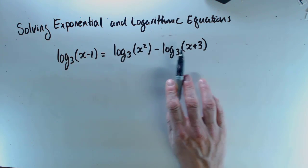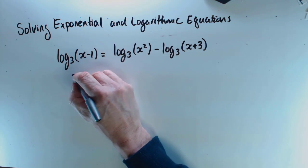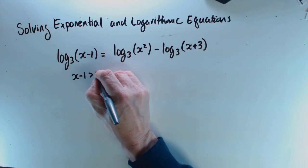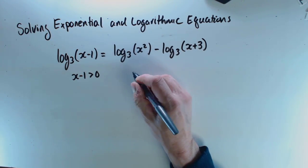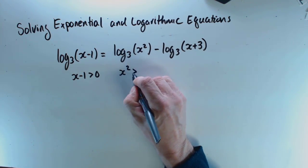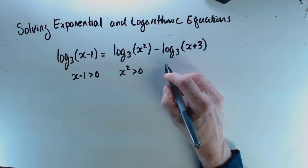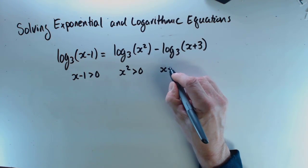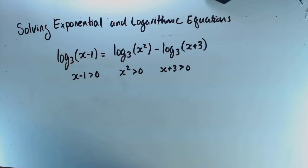Now one thing that has to be true is that x minus 1 has to be greater than 0 because I can't take the log of anything that's negative. x squared has to be greater than 0, and that's no big deal. x squared is always bigger than 0, and x plus 3 also has to be greater than 0.